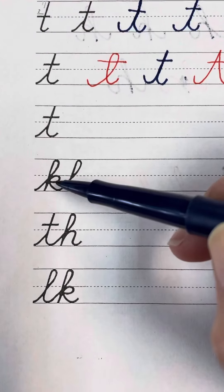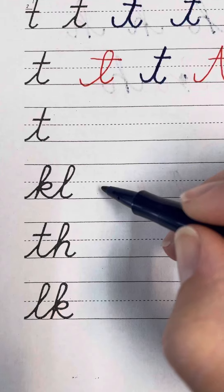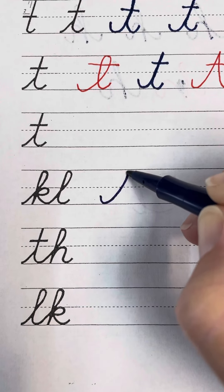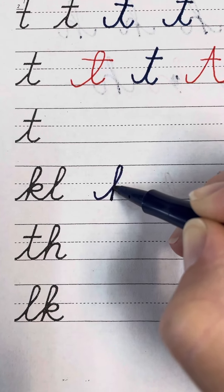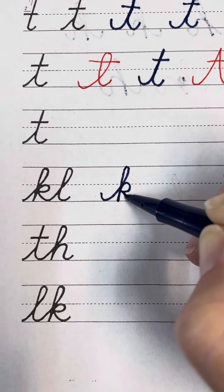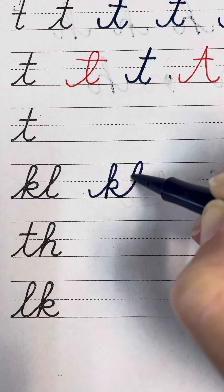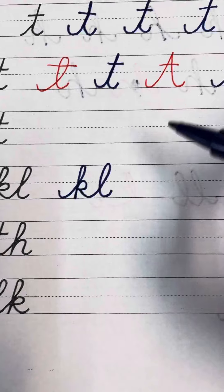So let's connect the K and the L. So we're gonna swoop up to make the K, tuck in that little belly, and you're gonna loop straight up into the L. Alright, let's try another one.